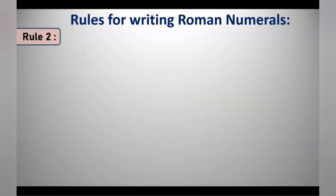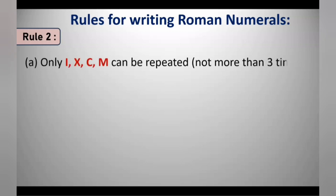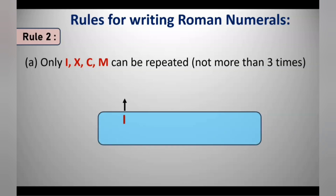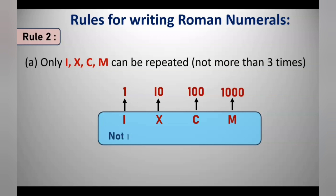Rule 2: Only I, X, C, and M can be repeated. Remember, any letter cannot be repeated more than 3 times. So I (1), X (10), C (100), and M (1000) — only these can be repeated, but not more than 3 times.